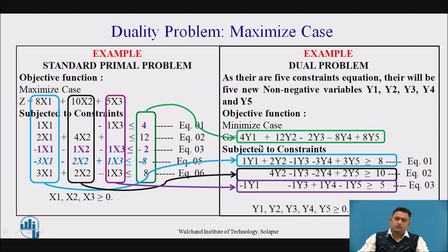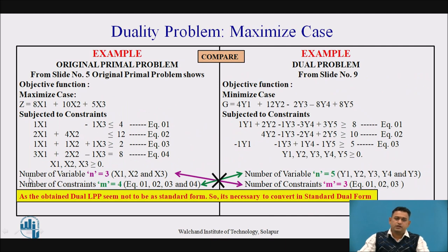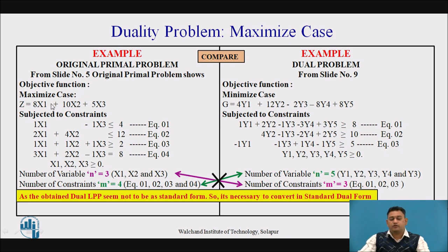However, this obtained dual problem is again not in standard form. In the original primal problem the number of variables is 3 and the number of constraints is 4. In the dual, the number of variables n = 5 and number of constraints m = 3. The number of constraints in the primal should equal the number of variables in the dual, but here m = 4 while n = 5, so this dual is not in standard form.